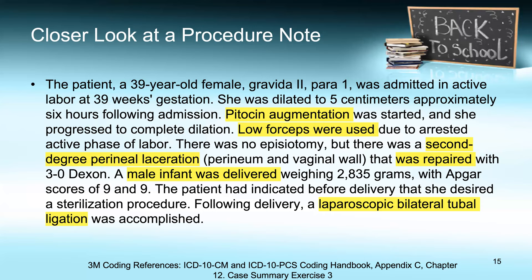With the delivery, two key things stand out: the Pitocin augmentation and the notation of low forceps. For the tear, there is again a second-degree perineal laceration that was repaired. For the tubal ligation, it was laparoscopic and bilateral. The delivery of the baby used low forceps to pull the baby out, so this is not a spontaneous or manually assisted delivery — it is an extraction. Extraction is defined as pulling or stripping out or off all or a portion of a body part by use of force, with the body part being the products of conception.